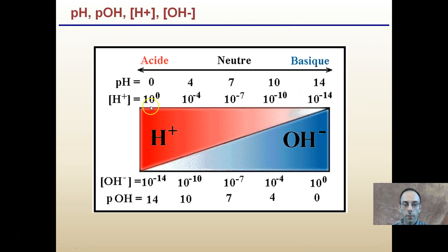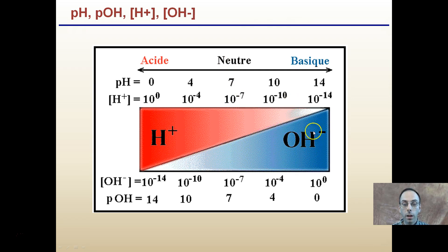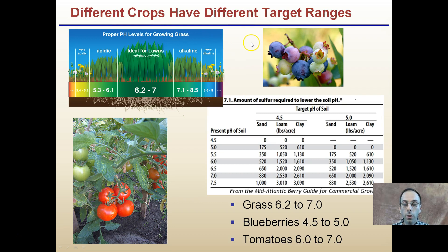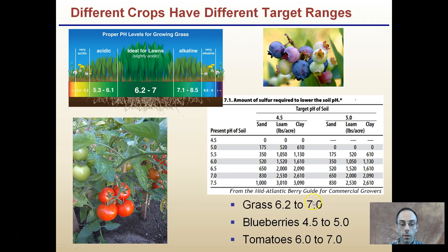A very acidic environment has a lot of hydrogen ions. As we move toward more basic conditions, the hydrogen ion concentration decreases and the hydroxide ion concentration increases — they form a proportional relationship. At pH 7, hydrogen ion concentration equals hydroxide ion concentration, which corresponds to pure water (H₂O). Different crops also have different target pH ranges: grasses prefer 6.2–7.0, blueberries 4.5–5.0, and tomatoes 6.0–7.0.